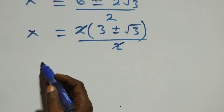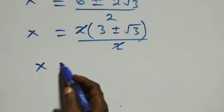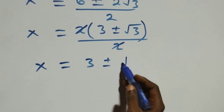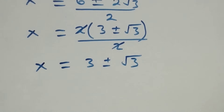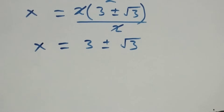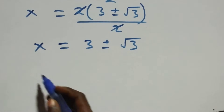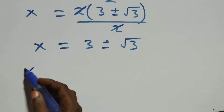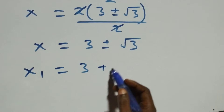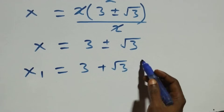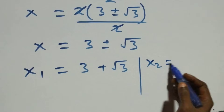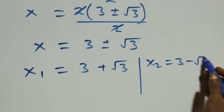So we have x equals 3 plus or minus root 3. There are two possible values of x: x1 equals 3 plus root 3, and x2 equals 3 minus root 3.